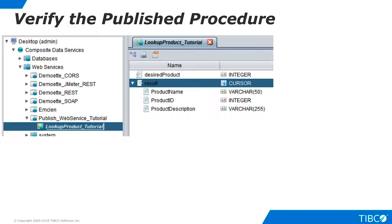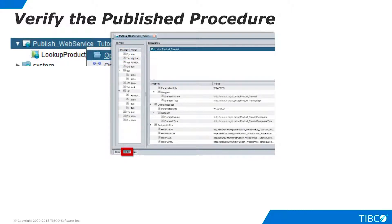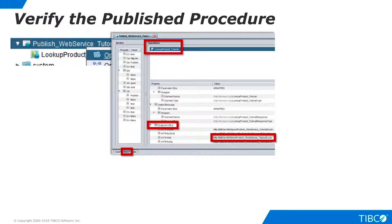Let's get some data. Open the published endpoint. Notice that both SOAP and REST services are automatically created. Click the REST tab. On the Operations pane, select the operation we just published. Scroll down to Endpoint URLs and double-click the URL for HTTP XML. This places the URL on the clipboard.